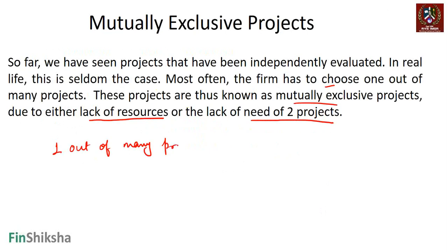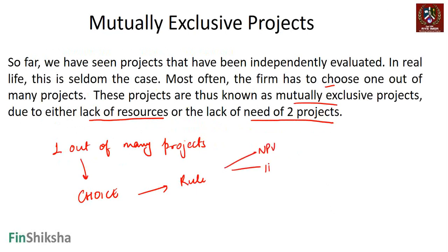When firms choose one out of many projects, this is a matter of choice and the choice depends on some sort of rule — whether we use NPV as a rule, IRR as a rule, or something else. It becomes important to understand where each rule works and where it does not. Mutually exclusive projects are projects where you choose one at the expense of the other.